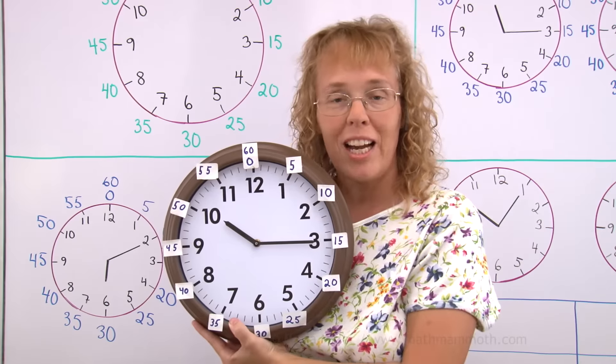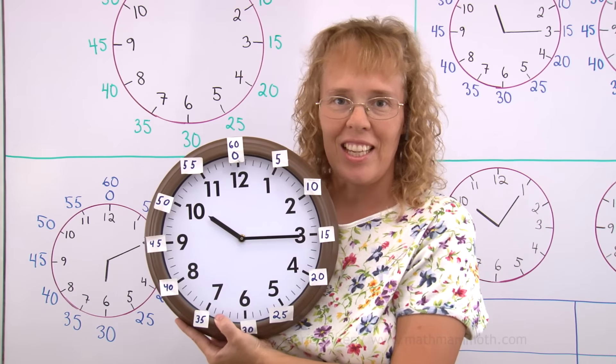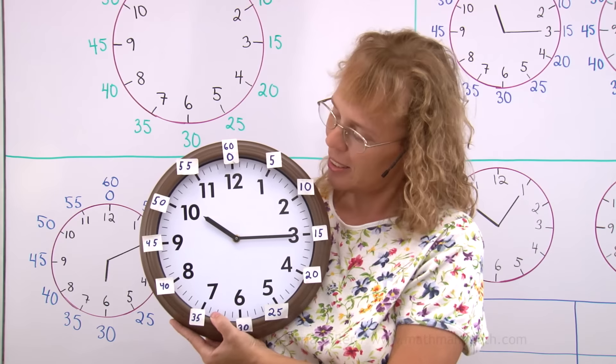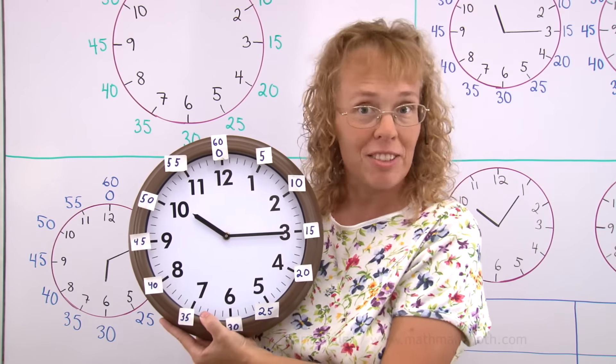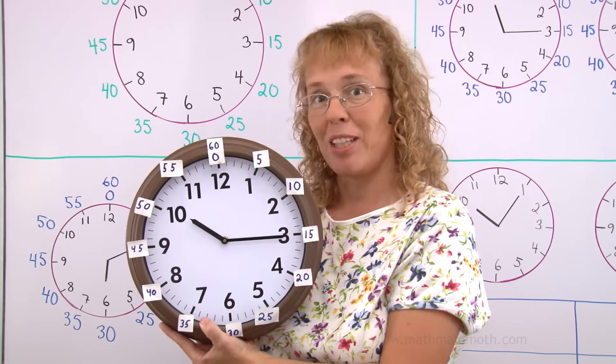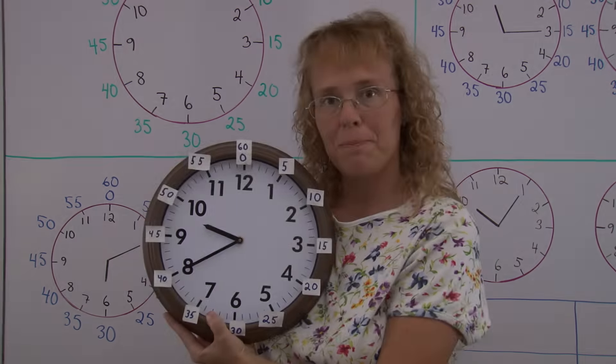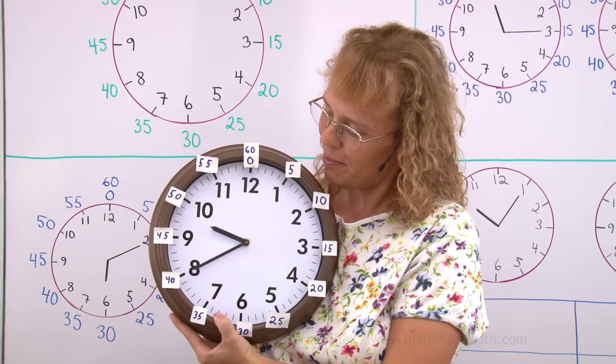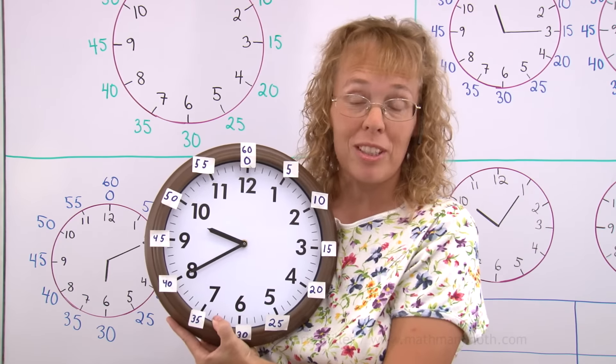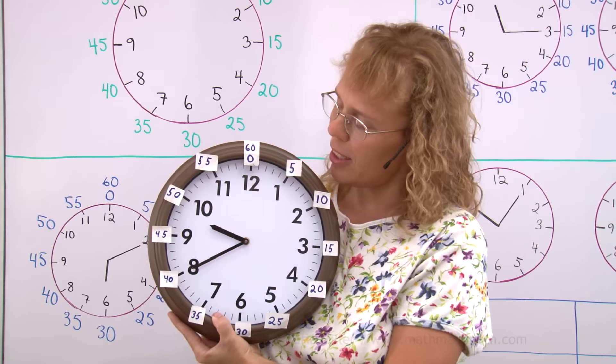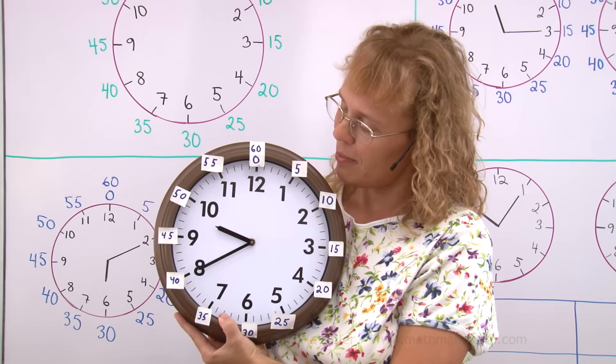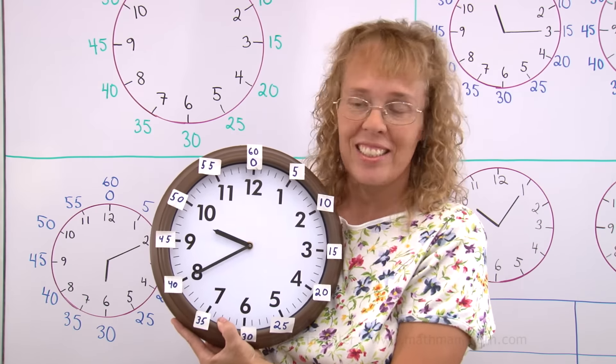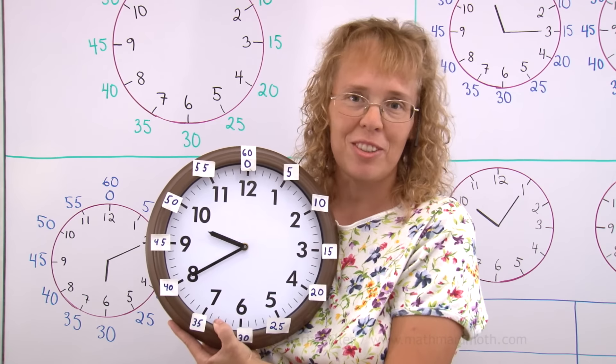And what time is it now? The hour hand over there points to 10 or a little bit past it. It's 10 hours and minutes are 15. So 10:15. And one more. This one. What time is it? The minute hand is clearly pointing to 40 minutes. But what about the hour hand? It's between 9 and 10. But it's not yet 10. So we say 9 hours and 40 minutes. Or 9:40.